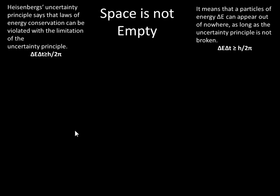And it means that particles of energy delta E can appear out of nowhere as long as the uncertainty principle is not broken. In other words, they can appear but for a very short amount of time. And this is what space is. You think it's empty, but it's not. These particles are appearing and disappearing all the time.